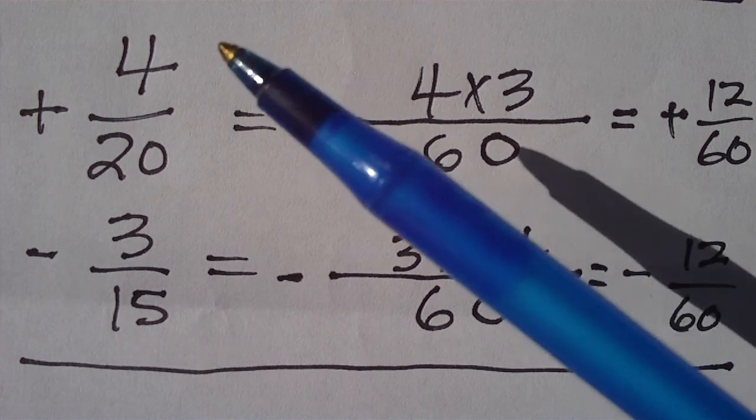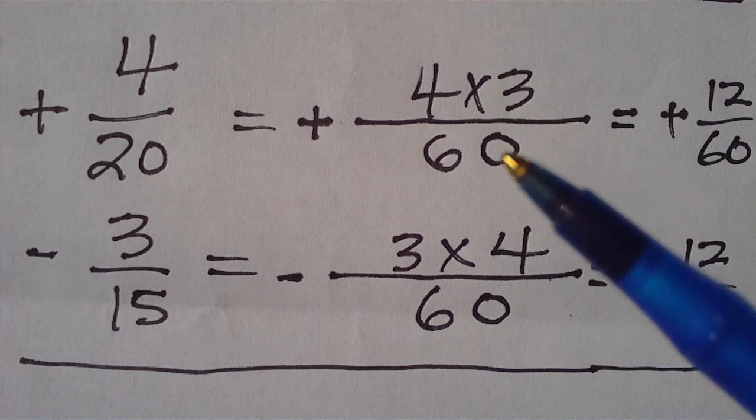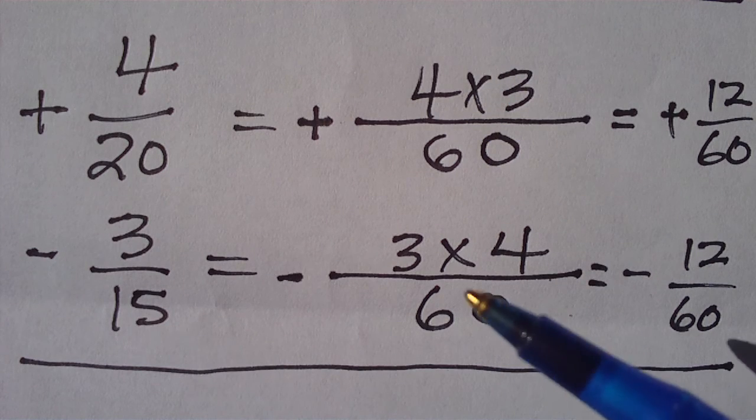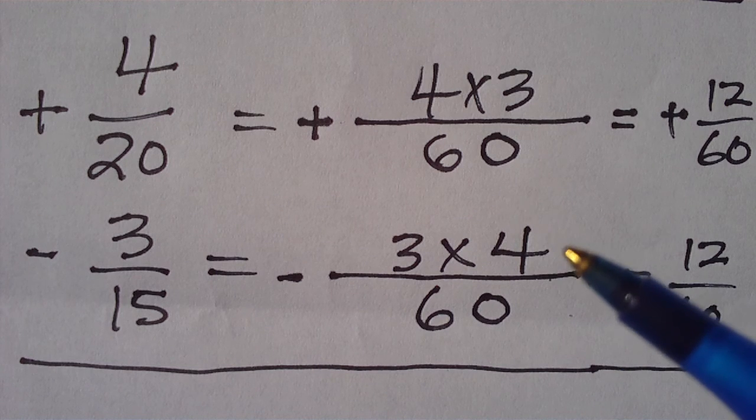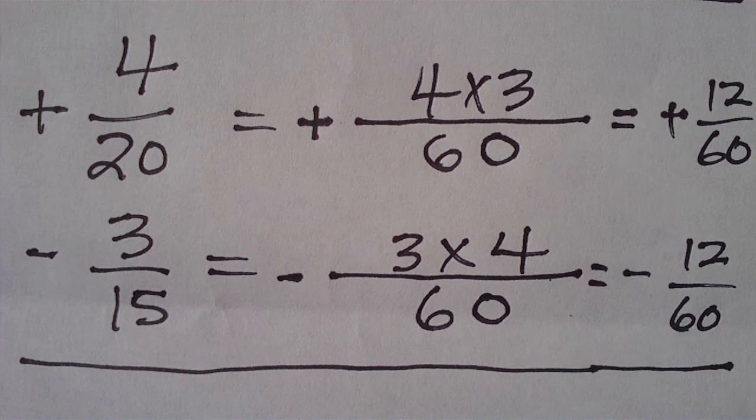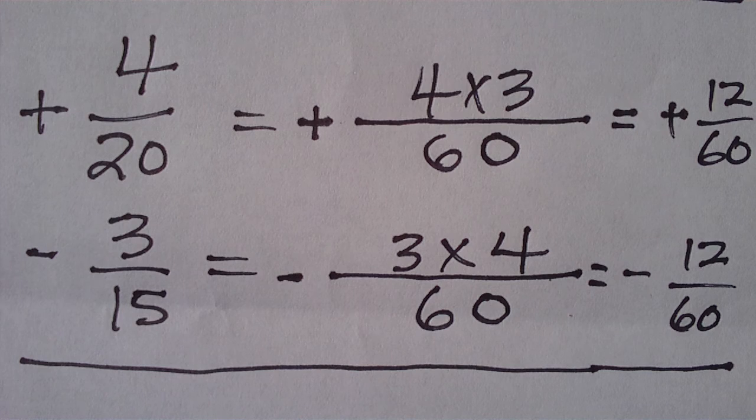So, twenty into sixty is three times four. That's three times four. Then, on the bottom, we go fifteen into sixty. It goes four times three. Three times four. And, in each case, we get twelve.